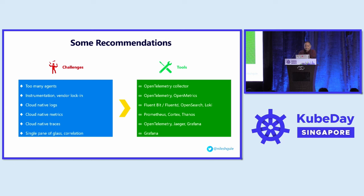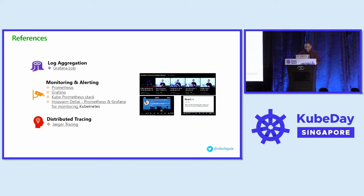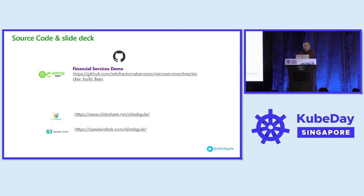When you need a single pane of glass, Grafana is most commonly used nowadays. For references, I've put some links — these slides are published on SlideShare and SpeakerDeck. I've also included links to my earlier talks from other forums, and a wonderful series of talks by Hussein Dalai on Prometheus and Grafana. The source code for this demo is available on GitHub, along with a markdown file if you want to reproduce it.